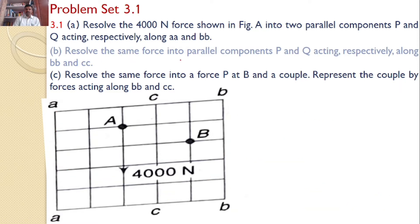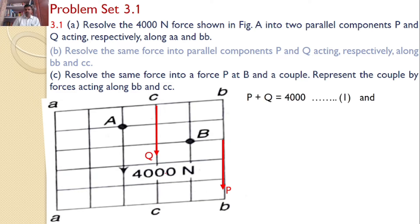Next, part B: resolve the same 4000 newton force into two parallel components P and Q acting respectively along BB and CC. Similar to the previous part, we assume two forces P and Q acting along BB and CC. The first primary condition is the sum of the two forces must equal 4000, so P plus Q equals 4000. The moments must also be satisfied.